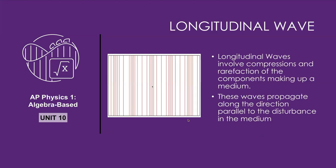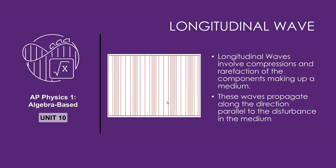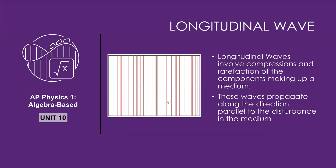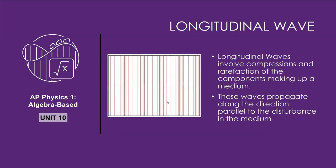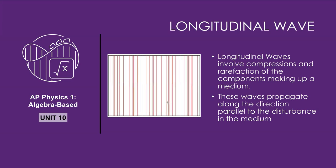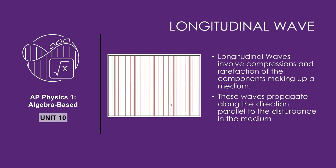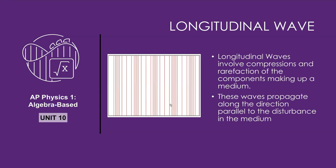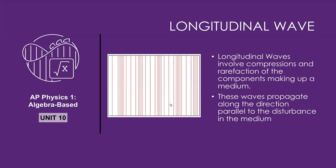Let's take a look at what a longitudinal wave looks like and how it behaves. Here is an example of a longitudinal wave which involves compression and rarefaction of components of the material. Some areas appear to be more dense than others, and as a result, you can see that the wave will travel in the same direction as the compressed and rarefied medium.